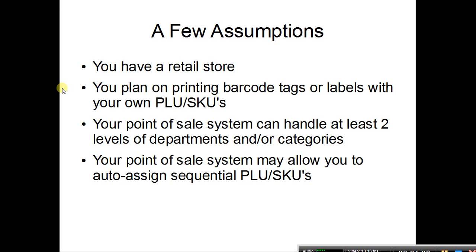So you have departments and below that you have categories, or departments and sub-departments, or categories as the top level and departments as the next level. The verbiage is a little different in each program. This is what limits programs like NCR Silver and First Data Clover — they only have one level, and that doesn't give most folks the detail they need. You'll also want to check if your system will auto-assign sequential PLUs or SKUs, because that will save quite a bit of time.